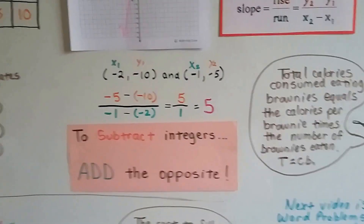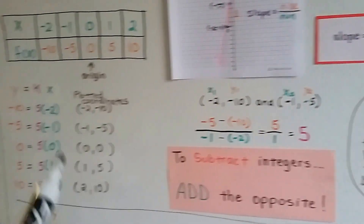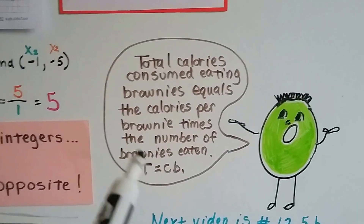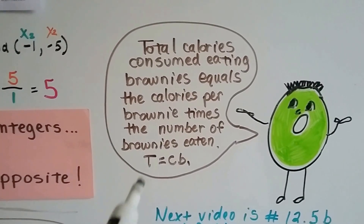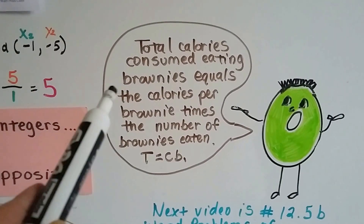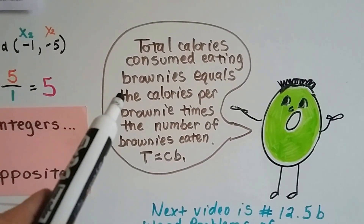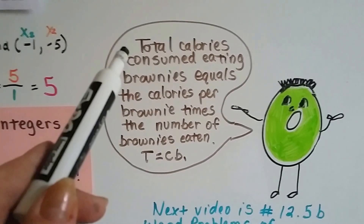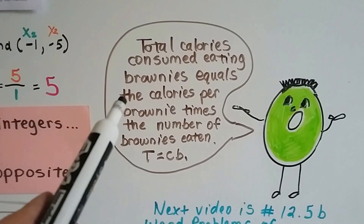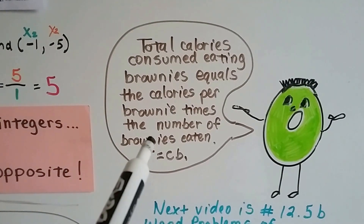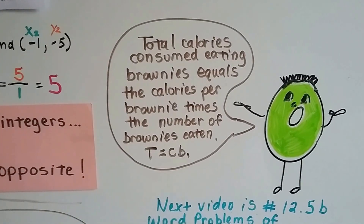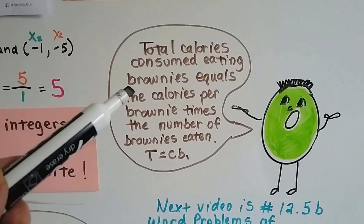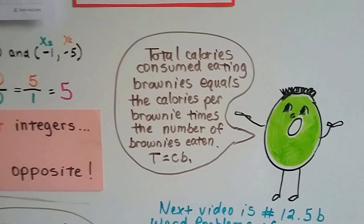Think of it as three variables: y, k, and x. The total calories consumed eating brownies equals the calories per brownie times the number of brownies eaten. The calories in one brownie is not going to change — that's the constant k. What changes is the total calories consumed and how many brownies you've eaten.